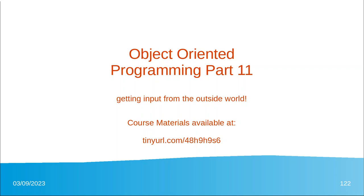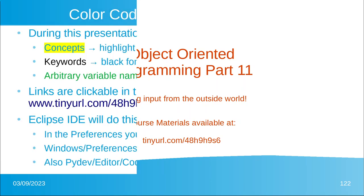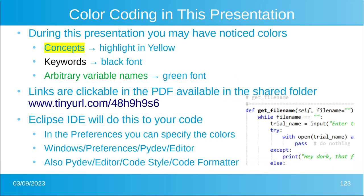First I want to start with this color coding that I'm using in the presentation. Concepts are mostly highlighted in yellow. Keywords — things you're going to find in Python — are in black font. Variable names we are giving, creating strings and things like that, are arbitrary things in green font. All of the internet links are clickable.